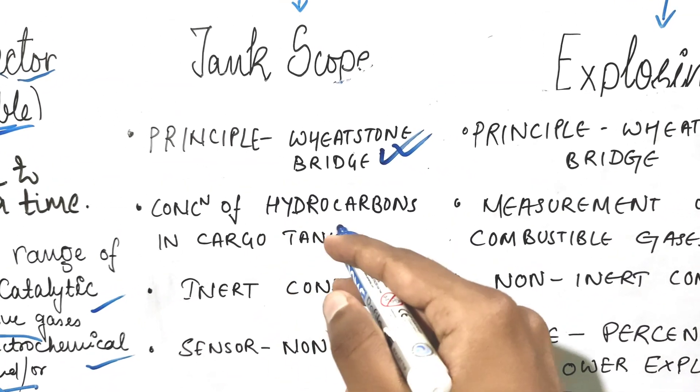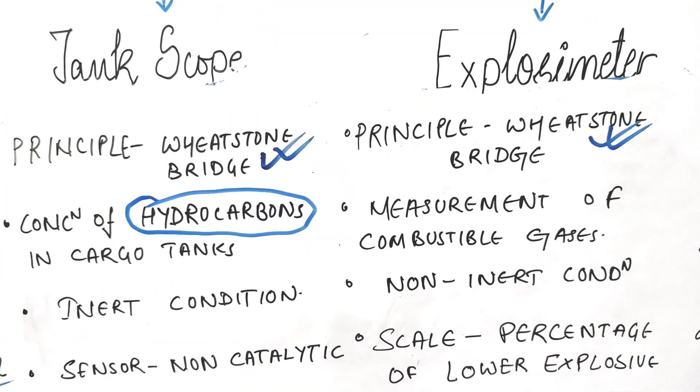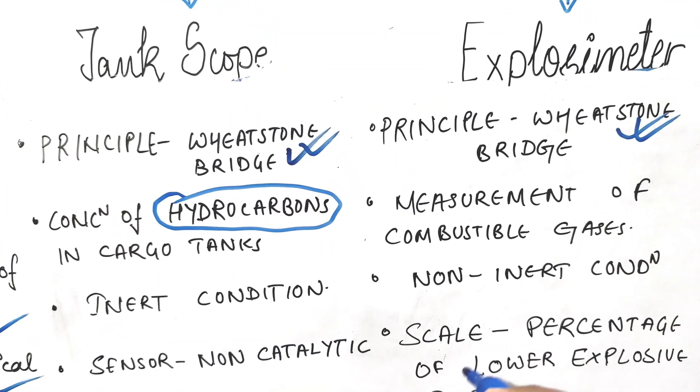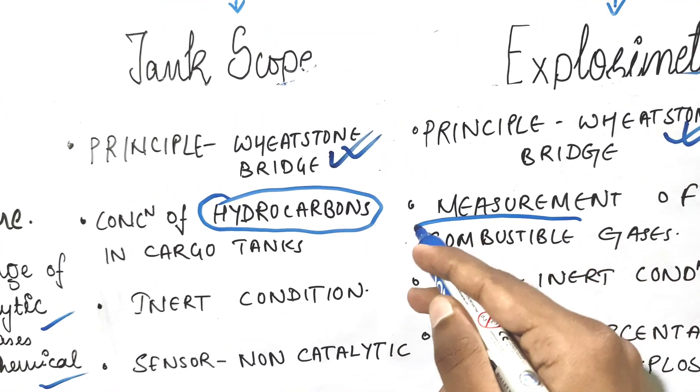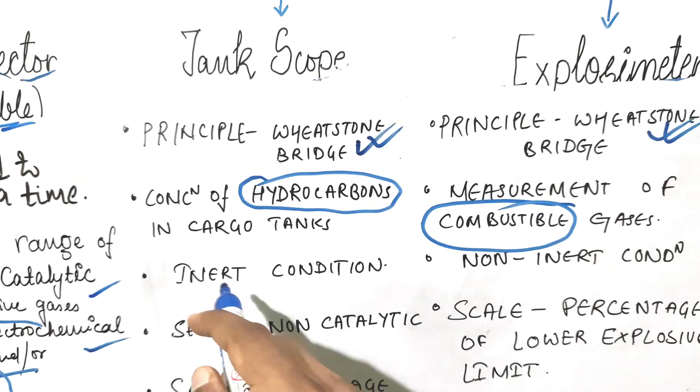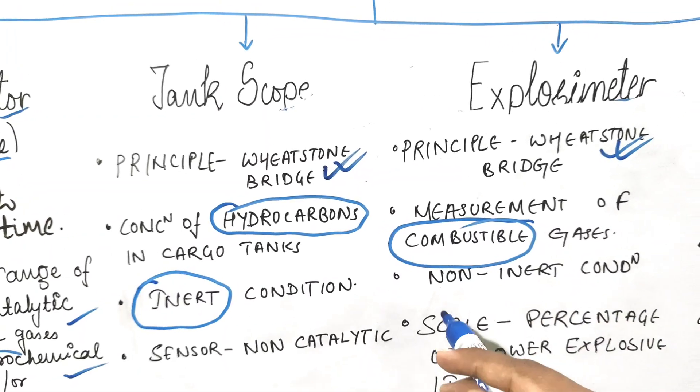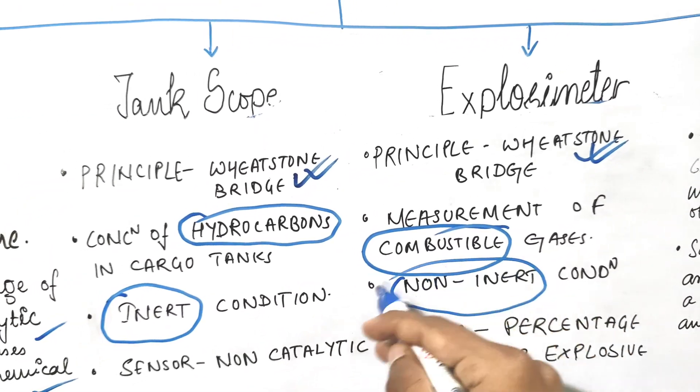Tankoscope measures the concentration of hydrocarbons in cargo tanks, whereas the explosimeter measures combustible gases. Tankoscope measures in inert condition, whereas explosimeter measures in non-inert condition.